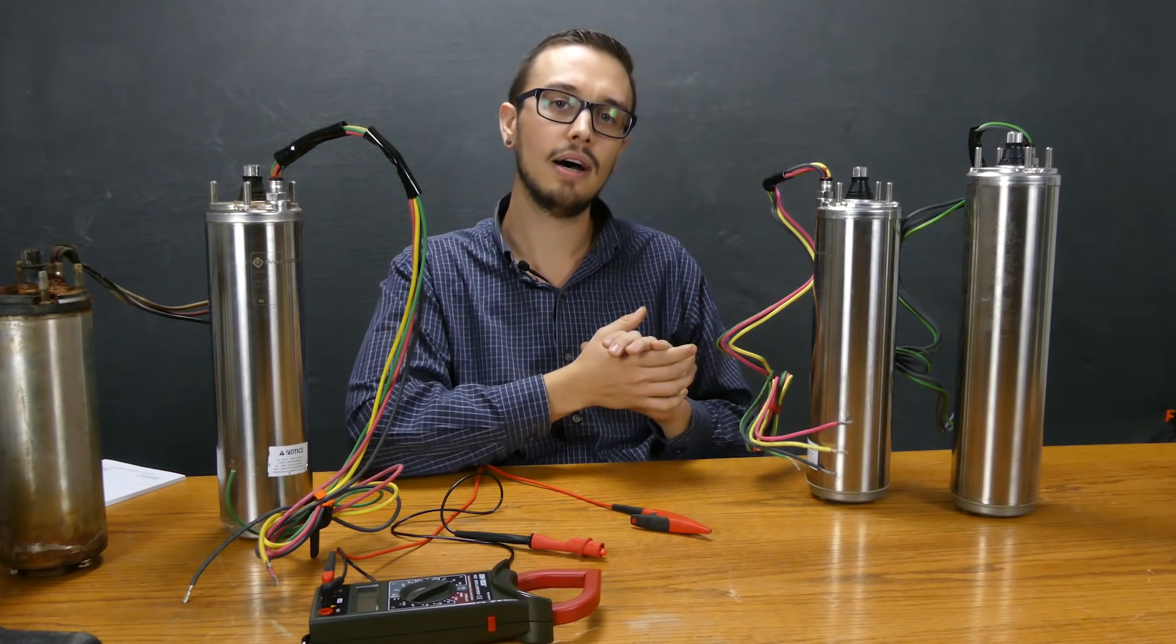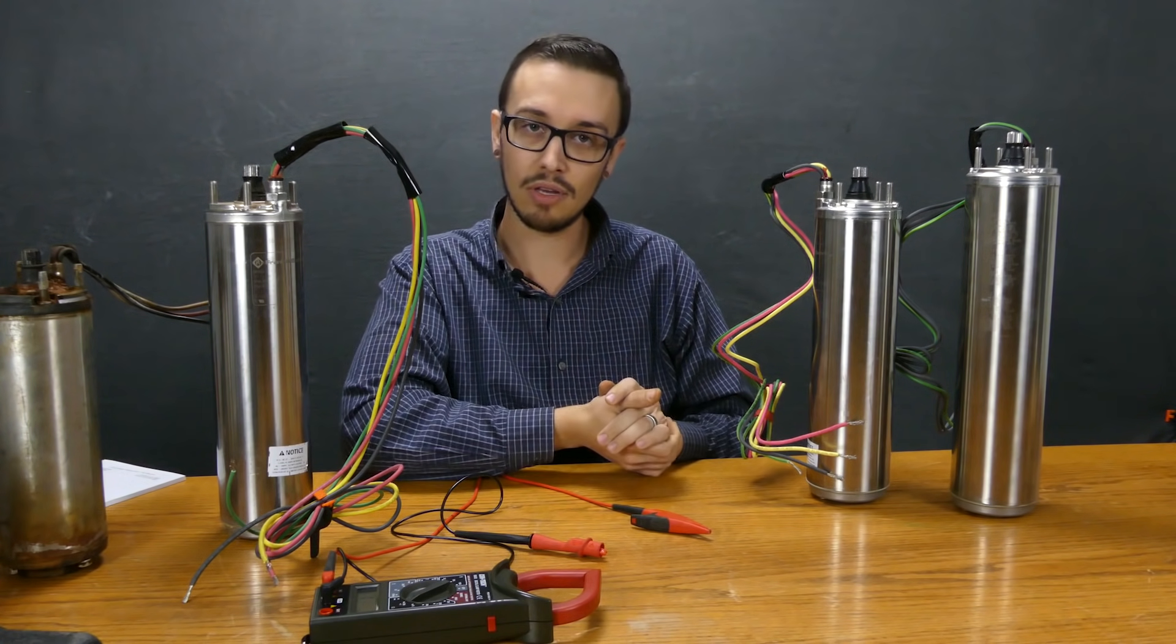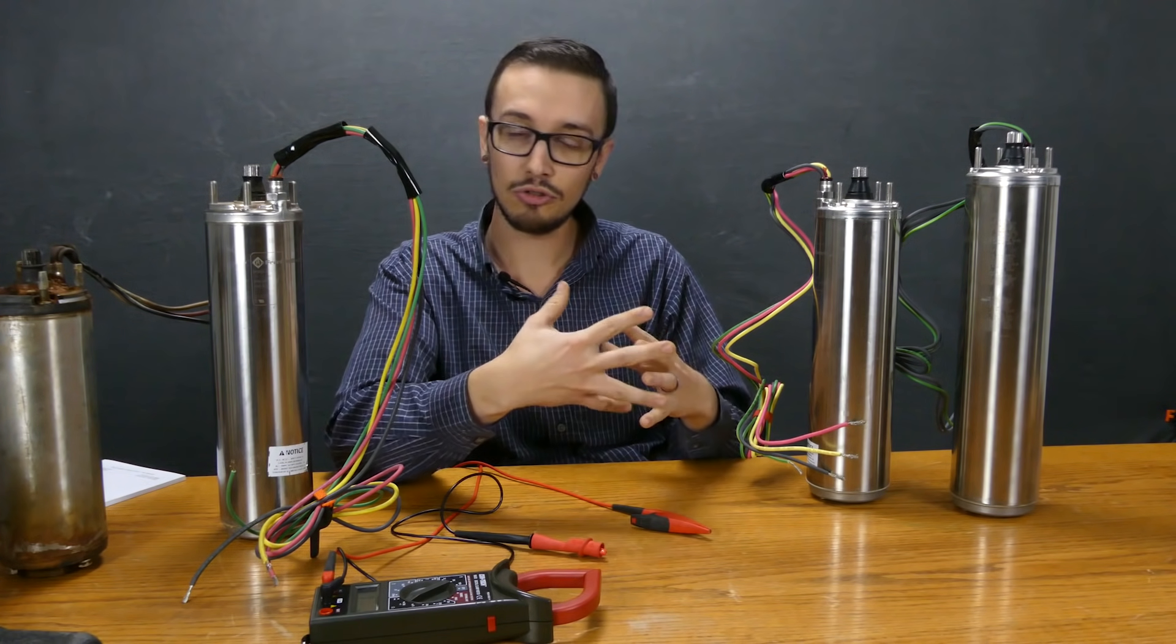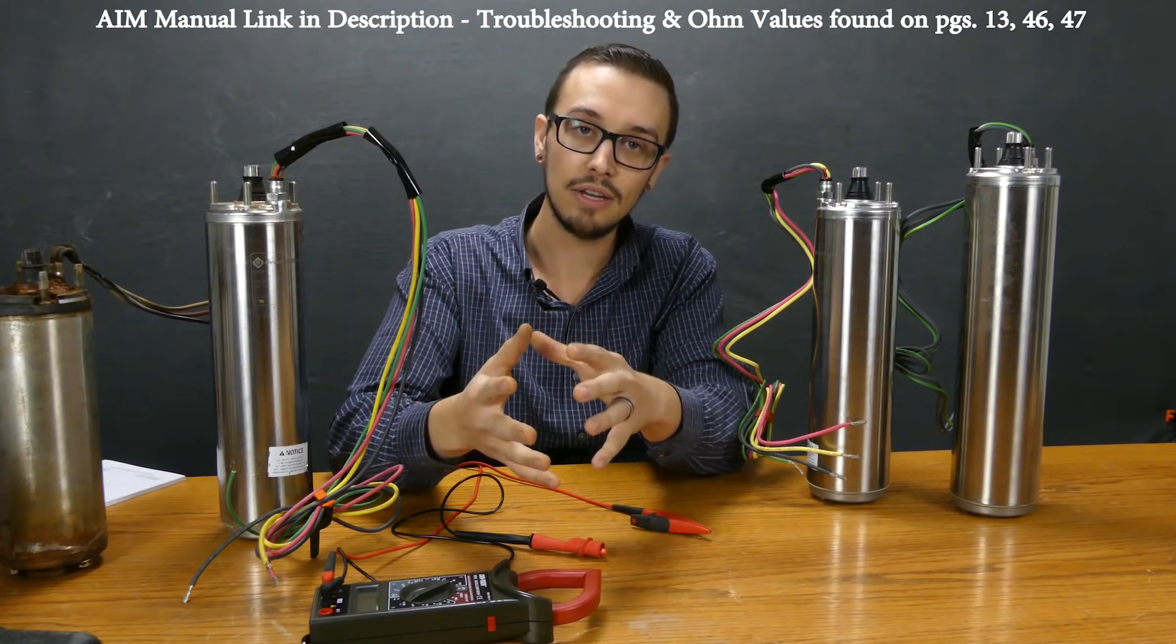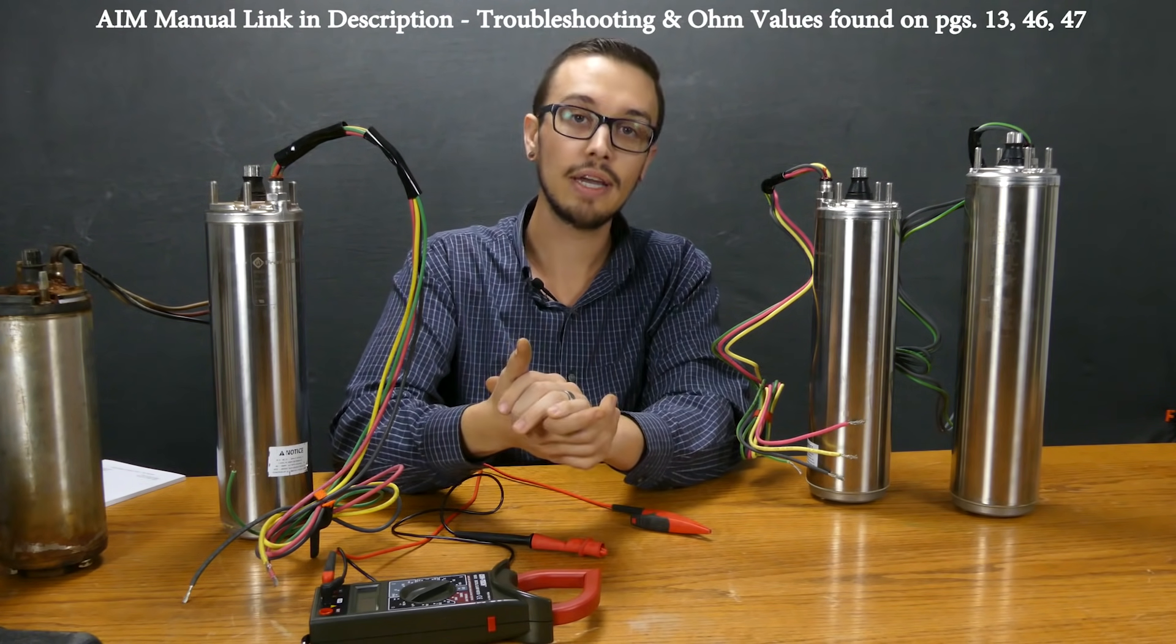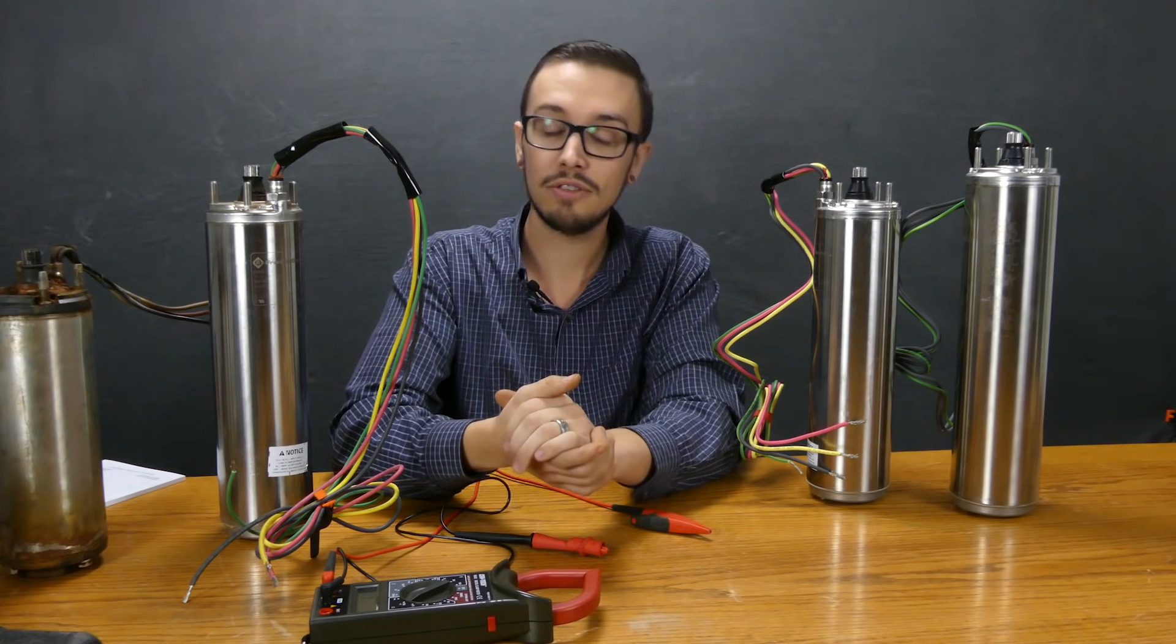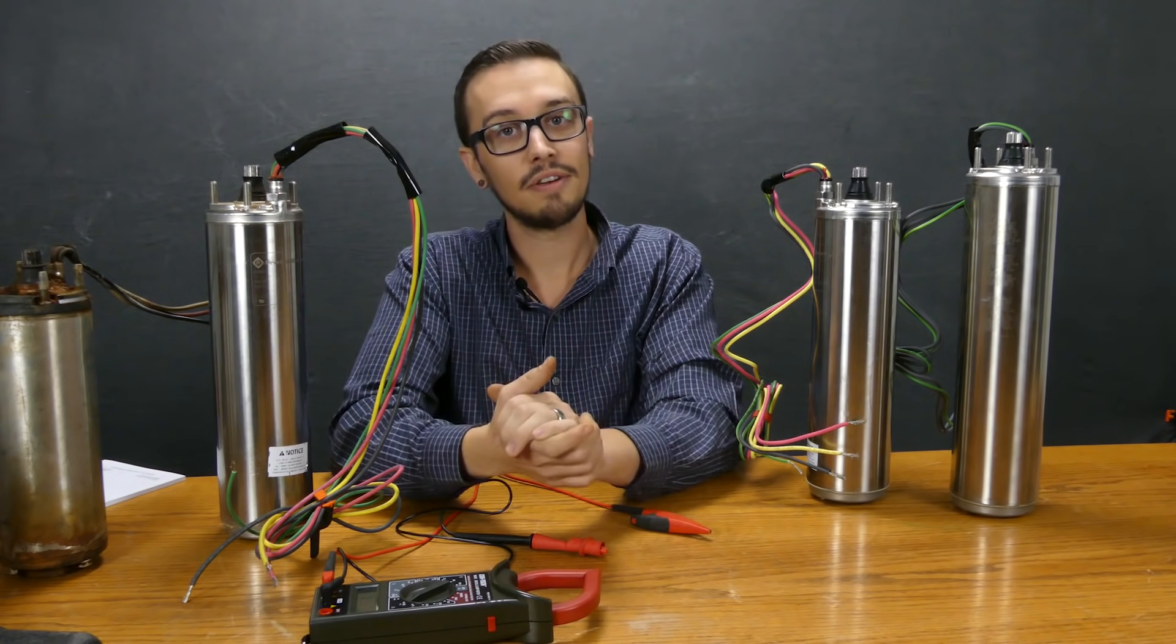Also keep in mind when you are testing down the well you have to take into account the voltage drop that occurs. Once again I'll refer you back to the AIM manual that does have a chart in there. So if you know the depth of the well, you know the length of the wire essentially, and it's going to give you an adjustment on how much you need to adjust each one of those readings. So keep that in mind and I hope that this video helped you. We'll see you next time.